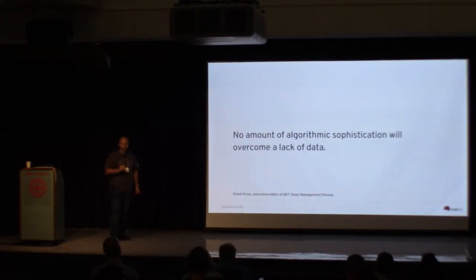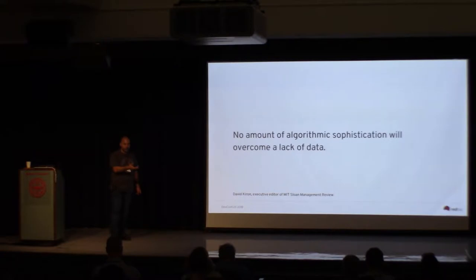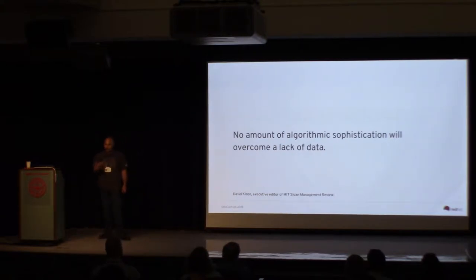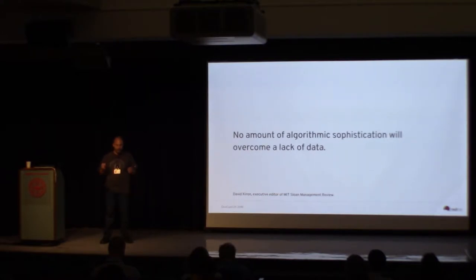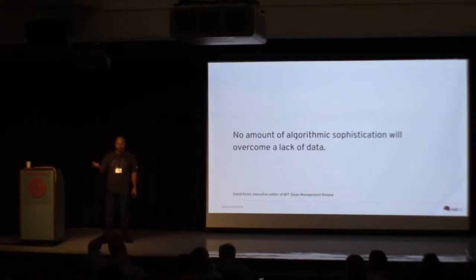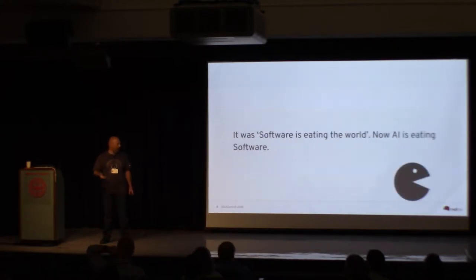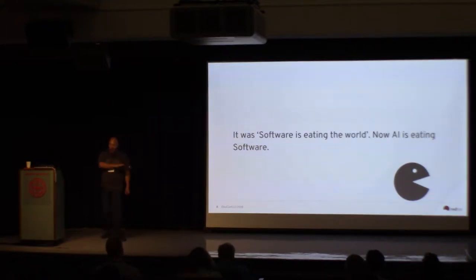An important point is that when you look at AI, code and algorithms are really important — but because it's all driven by the data, no amount of algorithmic sophistication can overcome the lack of data. Data is, at the end, an equal to code. You now need two halves to make a program function. If I write software using AI in a development process for an open source project, I need the training data and the code to make it functional. So now it's not software eating the world — it's AI eating software.